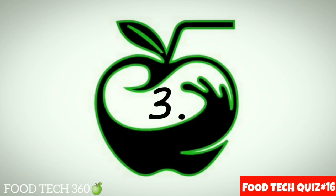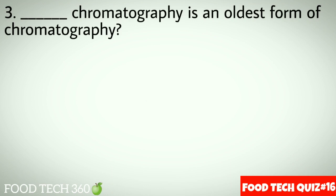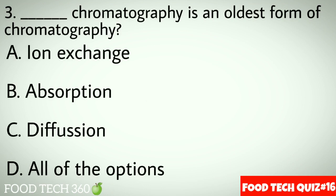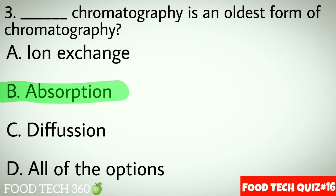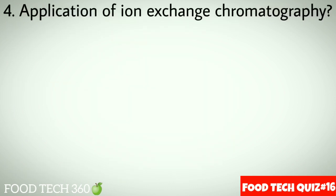Question No.3: Dash chromatography is an oldest form of chromatography. Options A: Ion exchange. B: Absorption. C: Diffusion. D: All of the options. Correct answer B: Absorption.